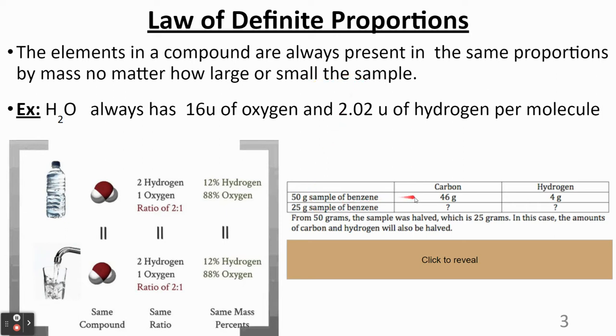So if we take a look over here, this is benzene. You don't really need to know what it is. But notice we have a 50 gram sample of benzene here. Over here, we can see that you have 46 grams of carbon in that sample and 4 grams of hydrogen in that sample.